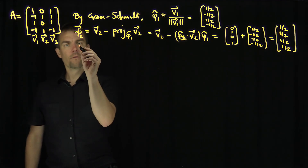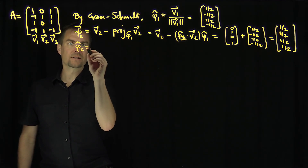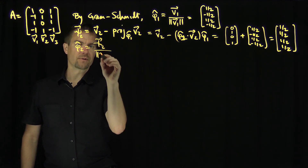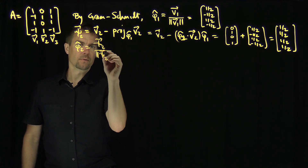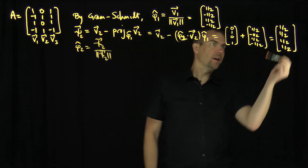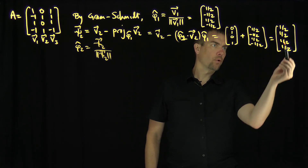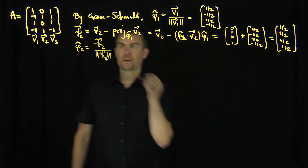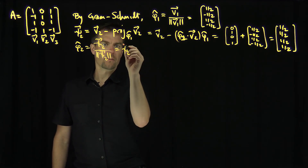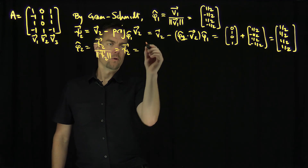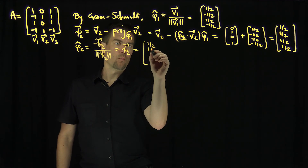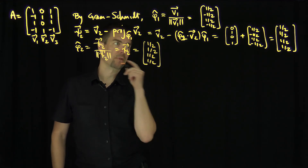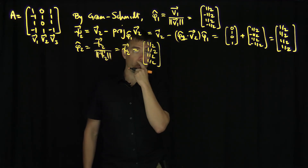Now φ̂₂ is ψ₂ over the length of ψ₂. The length of ψ₂: 1/4 + 1/4 + 1/4 + 1/4 = 1, so it's already a unit vector. Therefore φ̂₂ = ψ₂ = [1/2, 1/2, 1/2, 1/2].